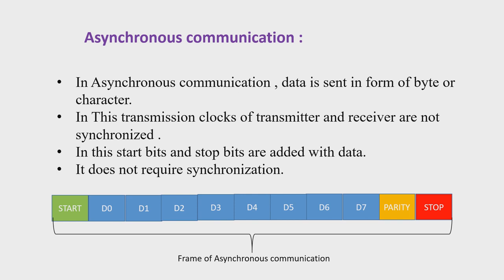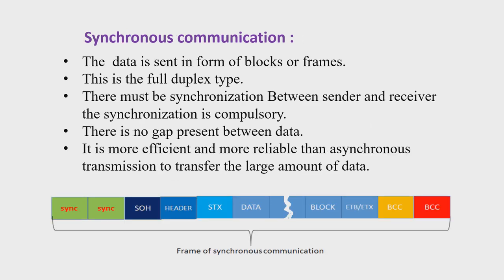Such a protocol is followed in asynchronous type of communication. It does not require any synchronization. The communication takes place at random speed. It requires extra bits in transmission — start bits and stop bits — which are added with the data. Extra bits are generally called redundancy in technical language. This redundancy is present in asynchronous communication, and hence asynchronous communication, even though it is simple, has the disadvantage of a slow data rate.